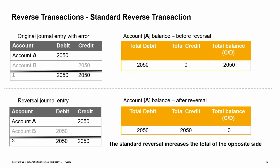The standard reverse transaction causes the system to post the debit in error as a credit, and the credit in error as a debit. This corrects the balance of the accounts. However, the standard reverse transaction causes an additional increase in the totals on the debit and credit sides, which might be misleading. On the left side of the image you can see an example of a journal entry with an error and the corresponding reversal entry. On the right you can see the effect of the reversal entry on the balance of account A. The total balance is cleared, however the debit side was not affected and the credit side is increased.